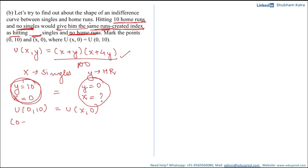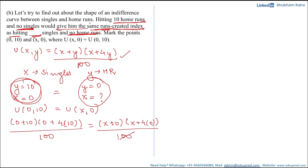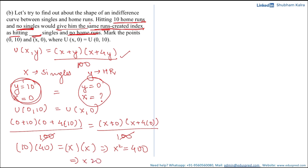Using this, u(0, 10) equals (0 plus 10) times (0 plus 4 times 10), divided by 100, which equals 10 times 40 divided by 100, equaling 400 divided by 100, which is 4. Setting this equal to u(x, 0) equals x times x divided by 100, we get x squared divided by 100 equals 4, so x squared equals 400.